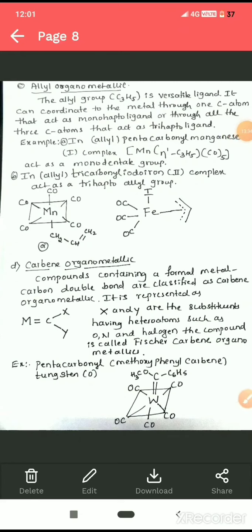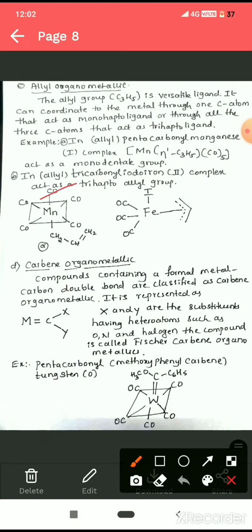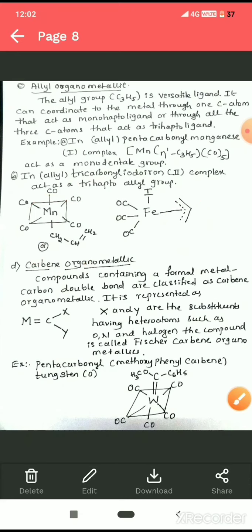The next type is allyl organometallics. The allyl group (C₃H₅) is a versatile ligand that can coordinate to a metal through one carbon atom (monohapto) or through three carbon atoms (trihapto). In one example complex, manganese is bonded to the allyl group through one carbon, acting as a monohapto ligand. In another, the dotted line indicates delocalization of pi electrons over three carbons, acting as a trihapto ligand.